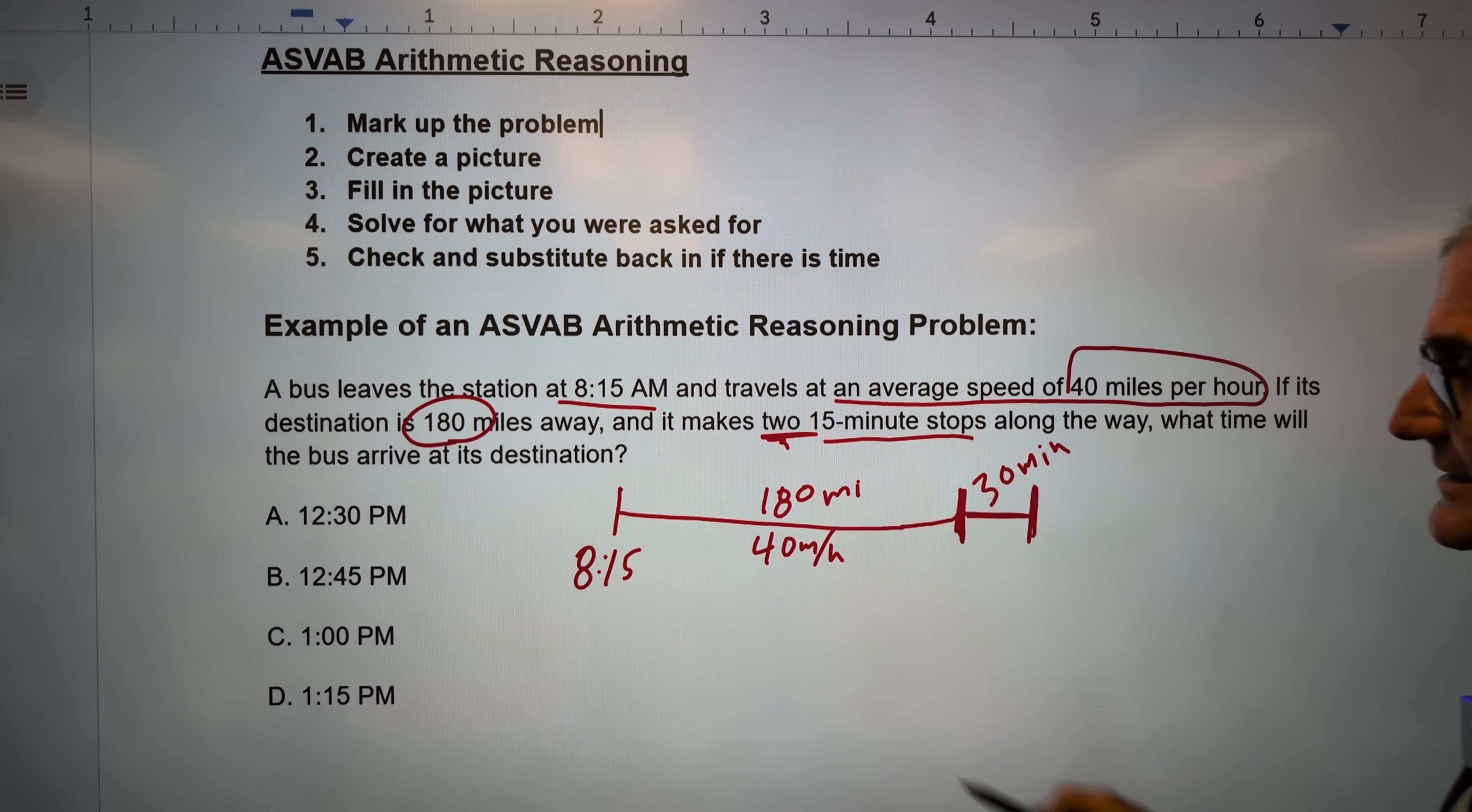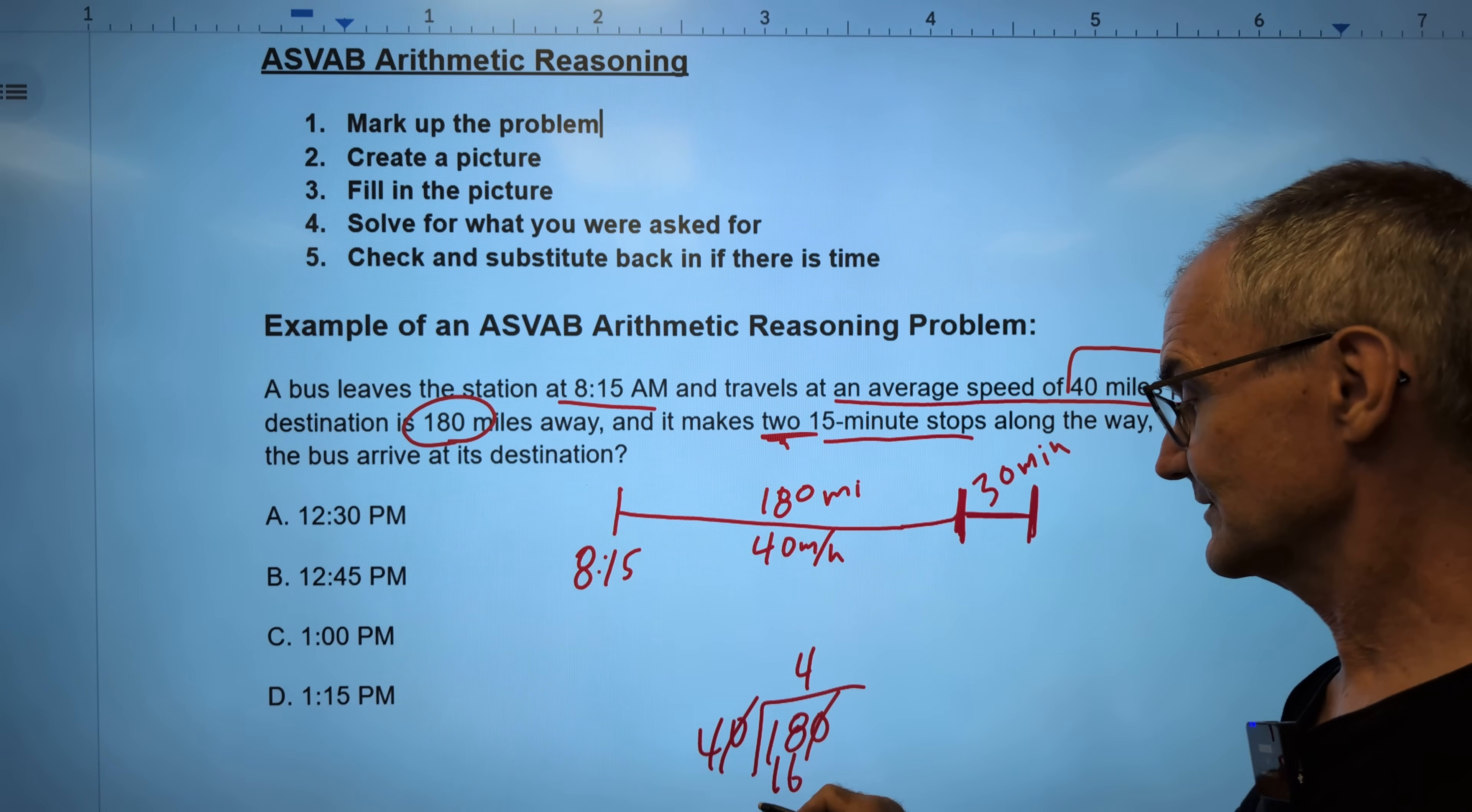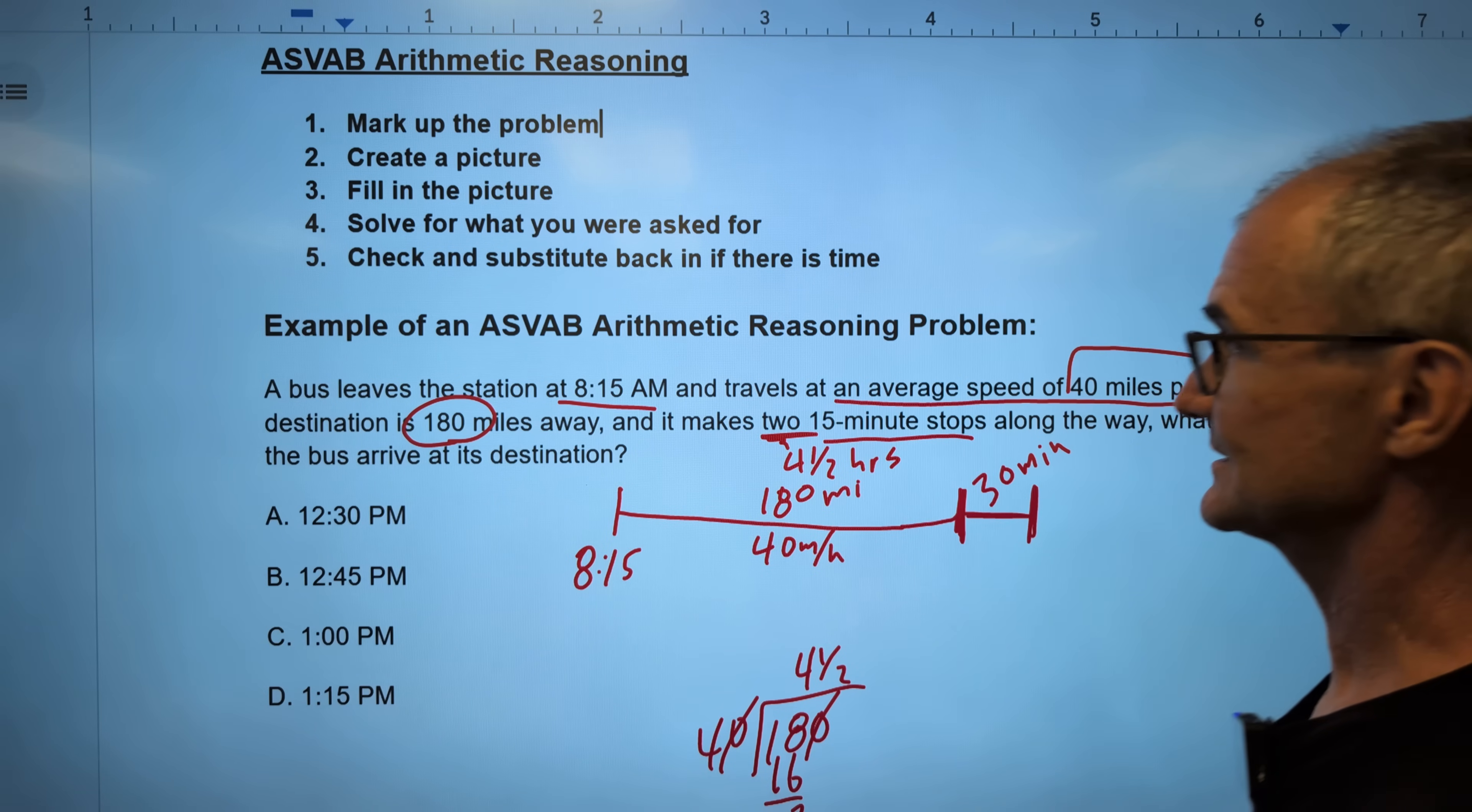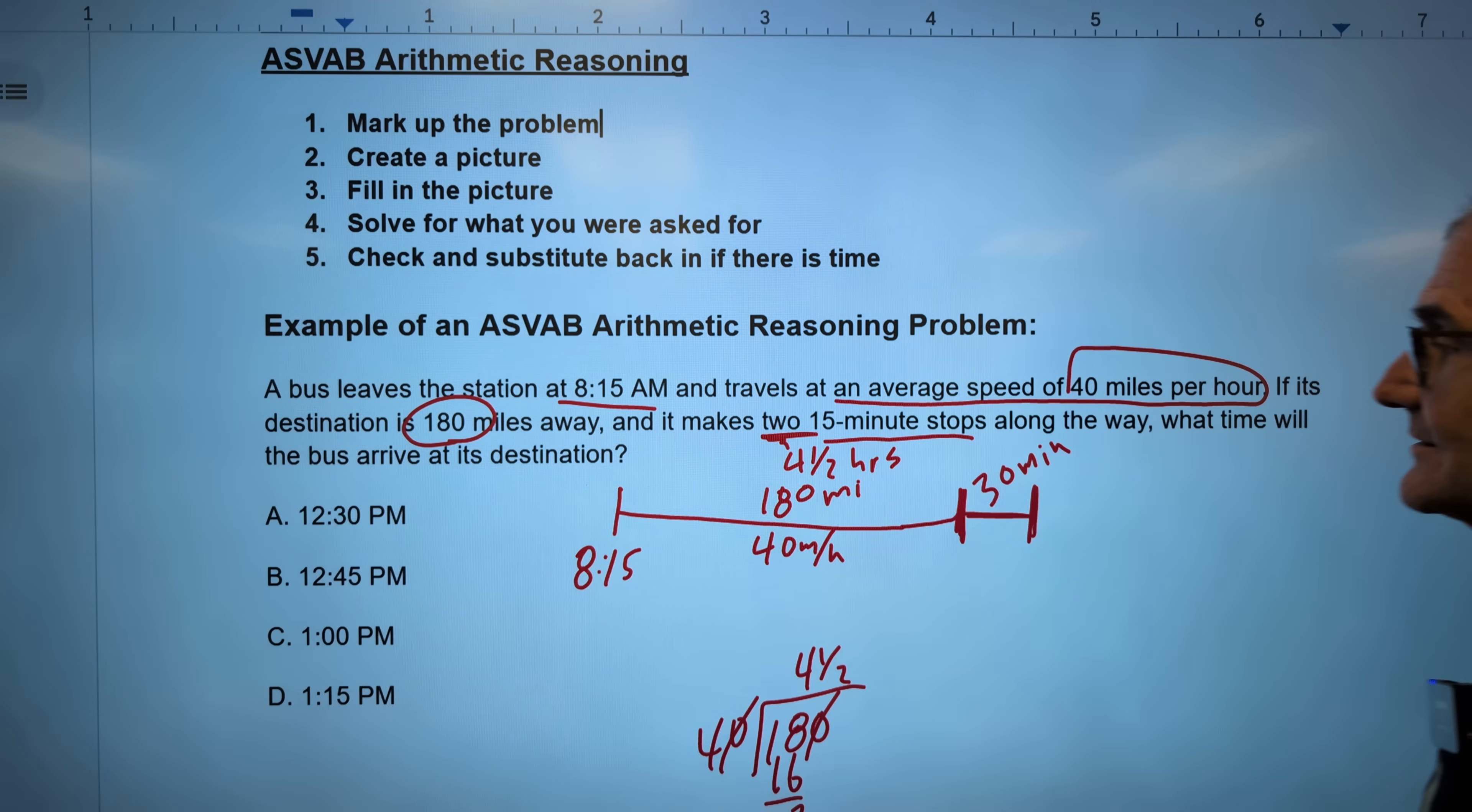What time will it get to this destination? Now I've got 180 miles over 40 miles per hour. 180 divided by 40. I could actually drop the zeros. Or I could keep it long. Four goes into 18 four times with one half left over. So this is four and a half hours. So that 180 miles converts to four and a half hours. Really keeping track of my units. So all I'm really doing is I marked up my equation. I created a picture. It's kind of a timeline. I'm filling in that picture right now. So I start at 8.15. I travel four and a half hours and another 30 minutes. So then solve for what you were asked for. What am I even looking for here? Hours? Miles?